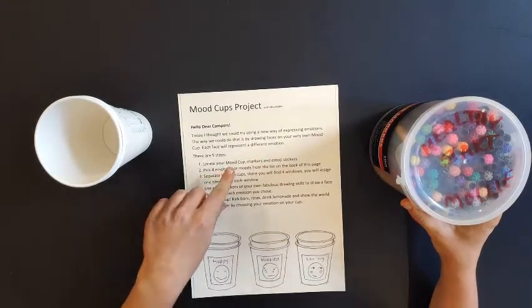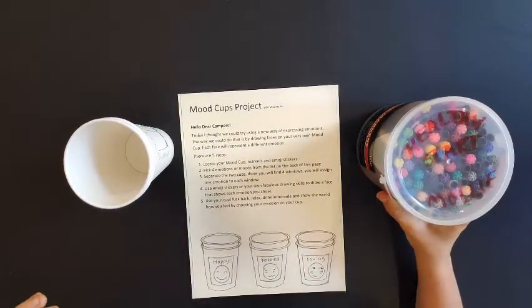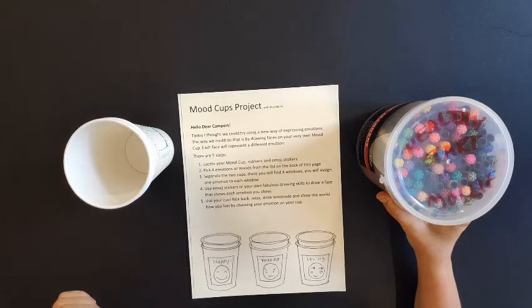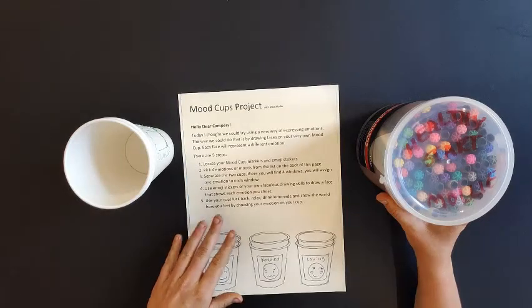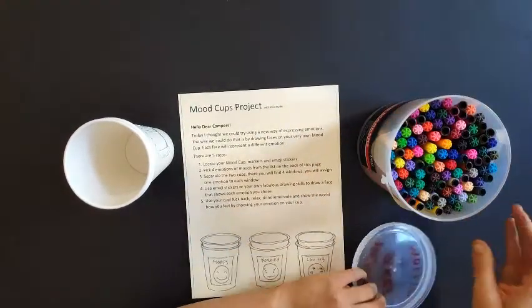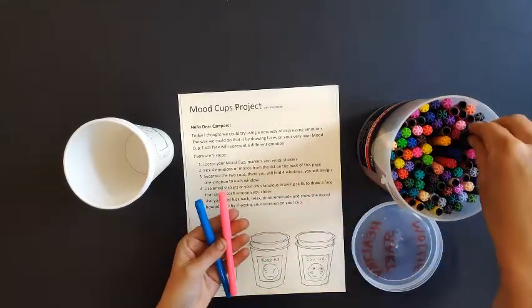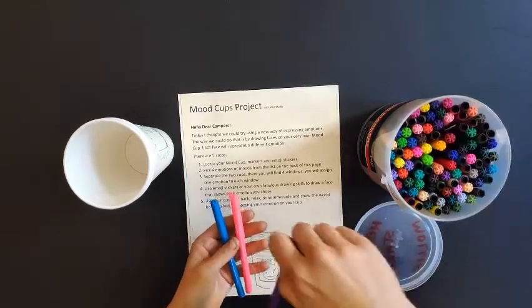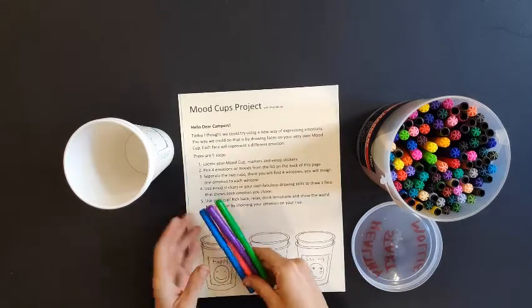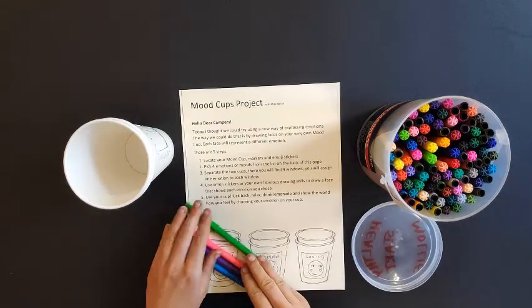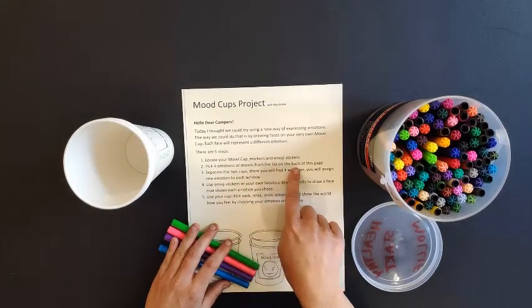Step one says to locate my Mood Cup markers and emoji stickers. I decided I'm not going to use emoji stickers. I'm just going to draw everything. I'll pick some colors. Maybe blue. This is a really wild pink color. Purple and green. All very different. I've got my four colors. So now I'm going to pick four emotions or moods from the list on the back of this page.